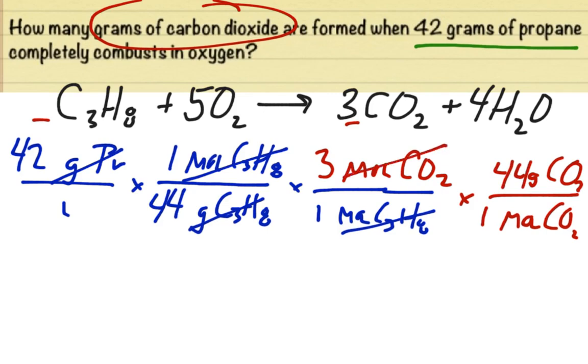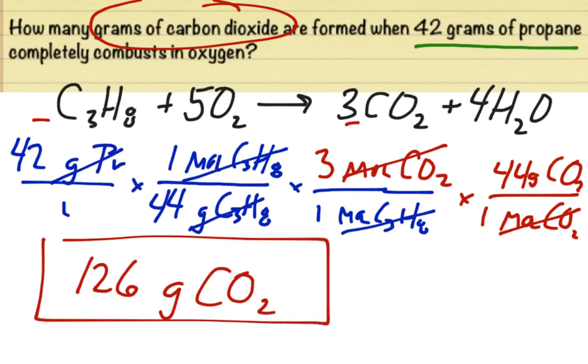Now we cancel out our units, and we come to 42 divided by 44 times 3 times 44, which gives us a grand total of 126 grams of carbon dioxide formed in this reaction. This right here is a three-step mass-to-mass conversion using stoichiometry.